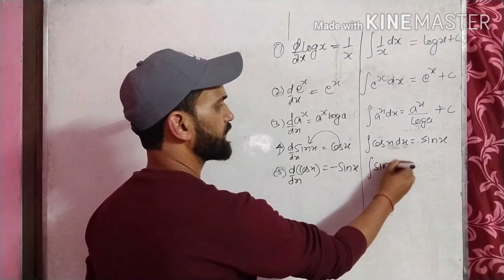Sixth: tangent x की differentiation होती है secant square x, तो secant square x का जो integration होगा वो tangent x होगा। cot x की differentiation होती है minus cosecant square x, तो integration of cosecant square x will be minus cot x plus c.